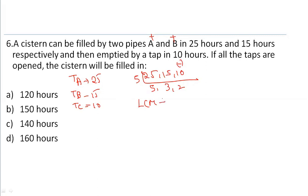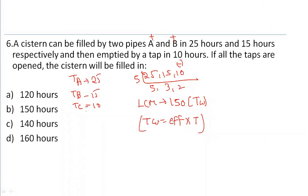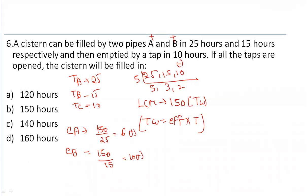LCM is 150, so take the total work as 150. Using the formula: total work equals efficiency multiplied by time. Efficiency of tap A is 150 divided by 25, which equals 6 — a positive value because it fills the tank. Efficiency of B is 150 divided by 15, which equals 10, also positive because it fills the tank.